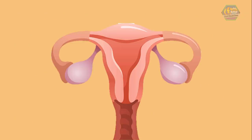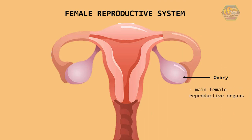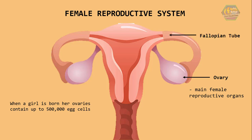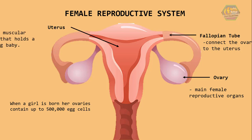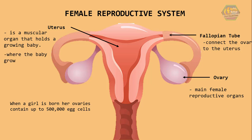Now let's talk about the female reproductive system. In women, the main reproductive organs are the ovaries. The two almond-shaped ovaries sit inside the lower belly. When a girl is born, her ovaries contain up to 500,000 egg cells — and that's a lot. But sadly, that's all they get in a lifetime. Two tubes called fallopian tubes connect the ovaries to the uterus. The uterus is a muscular organ that holds a growing baby. So remember, the babies grow in the uterus, not in the stomach.